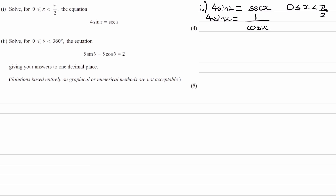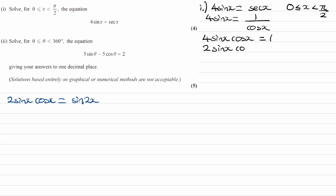Then bring the cos x to the left hand side. We can use the fact that 2 sine x cos x is equal to sine 2x. If I bring a factor of 2 from this equation to the right hand side and divide both sides by 2, I get 2 sine x cos x is equal to 1 half.